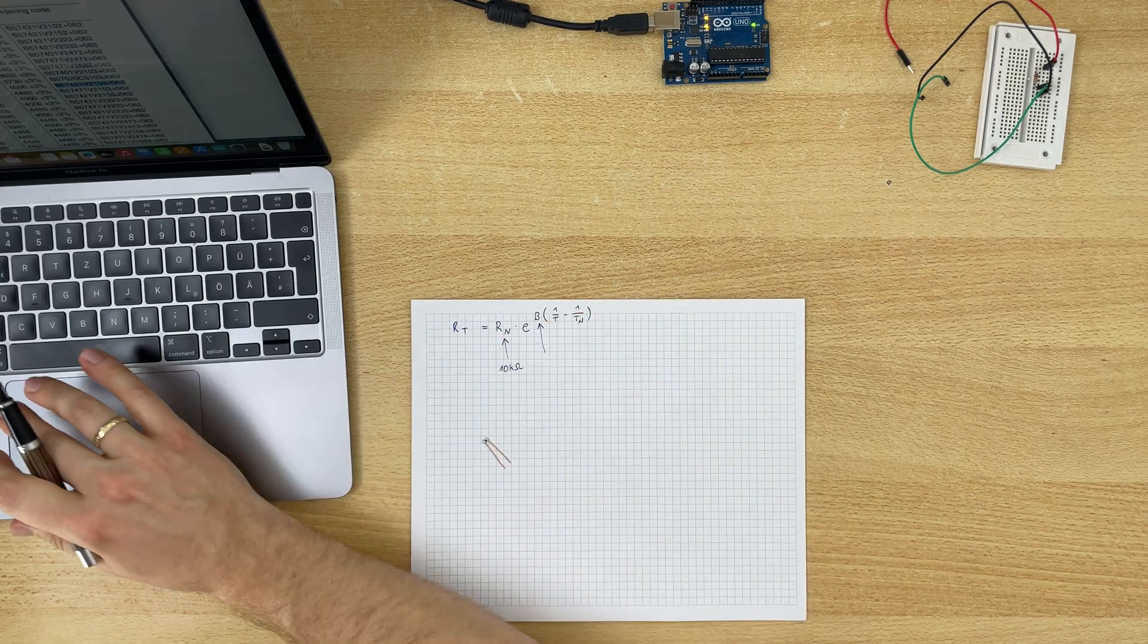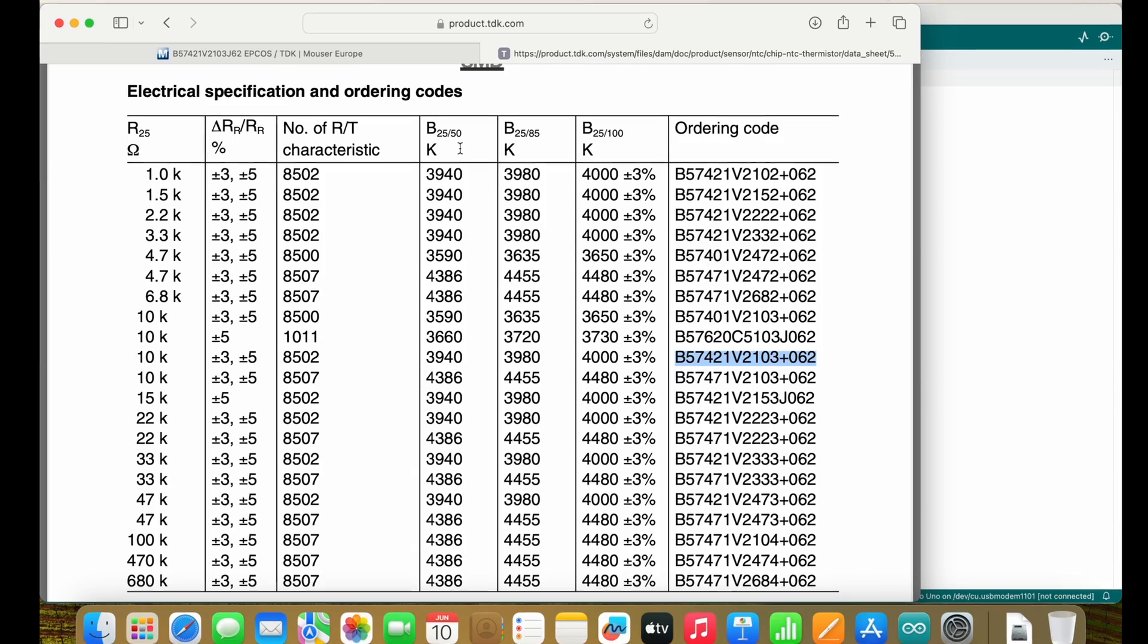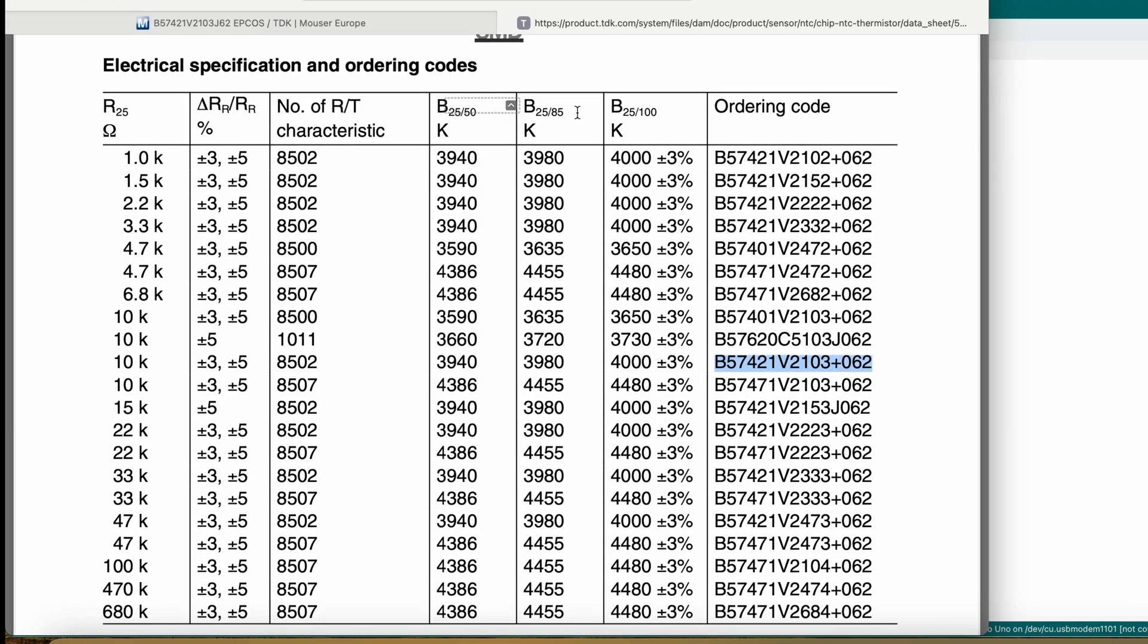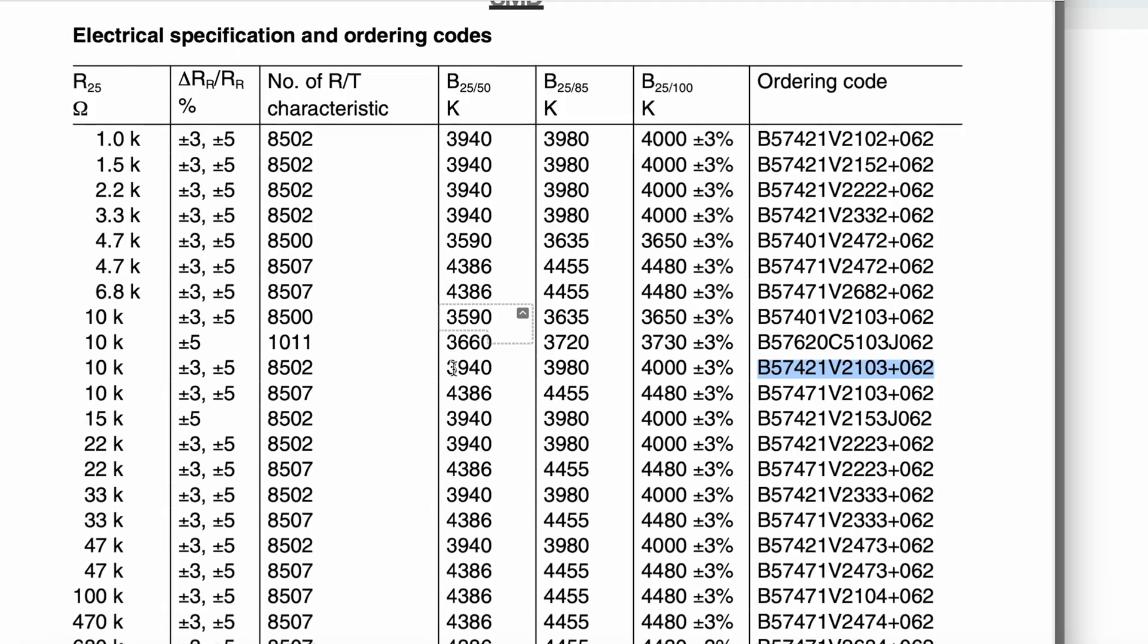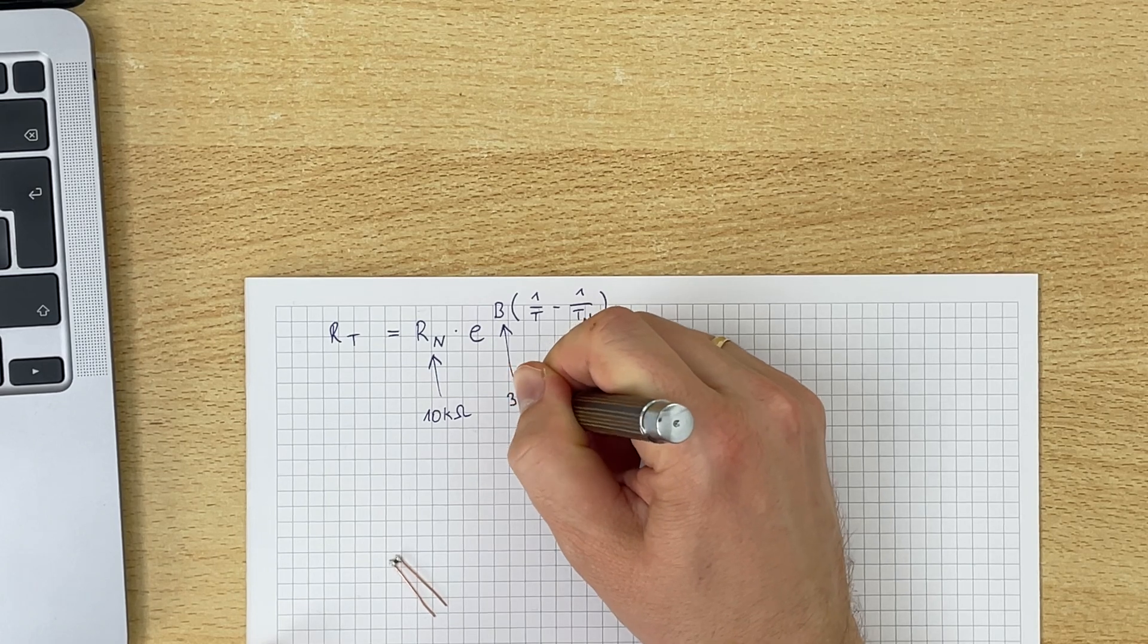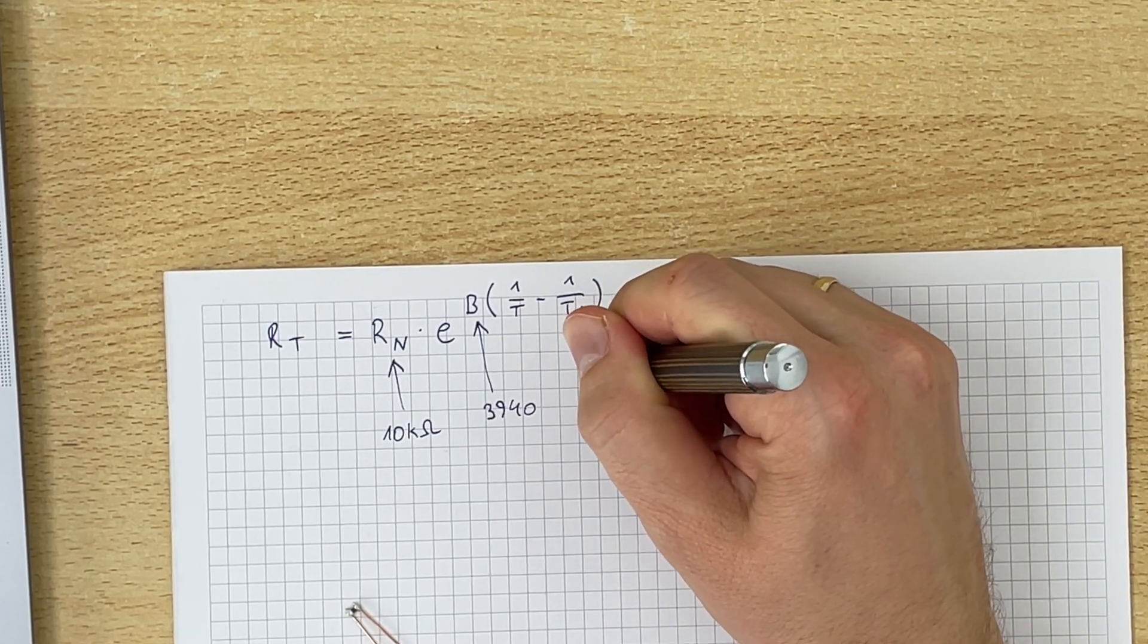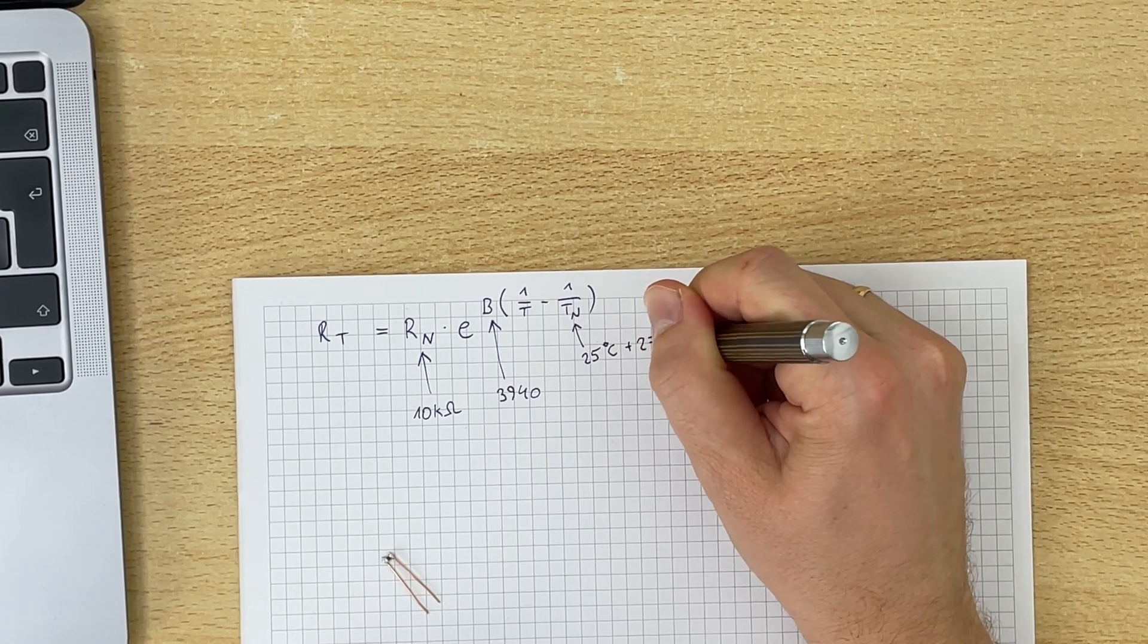This is the resistance at 25 degrees celsius. And then we have our B. We have slightly different values of B, and so the first B is the most accurate between 25 and 50 degrees celsius, and the next one is the most accurate between 25 and 85 and 25 and 100. For my smart home, I hope that the temperature will stay at around 25, so I will go with the first value. So my B is 3940. And the temperature right here is 25 degrees celsius plus 273.15.